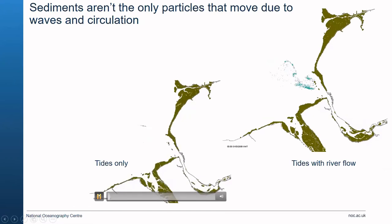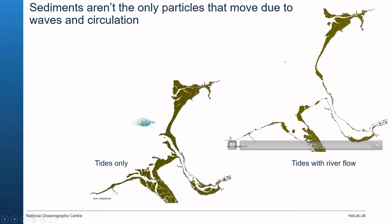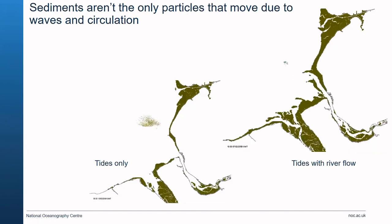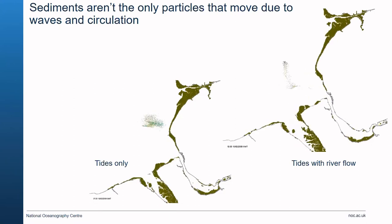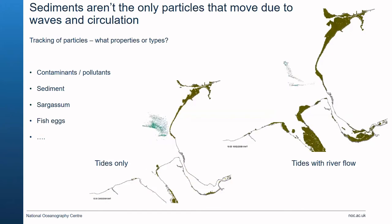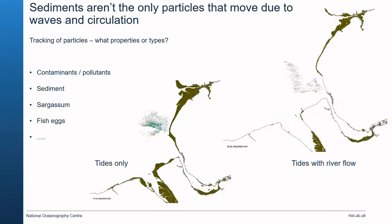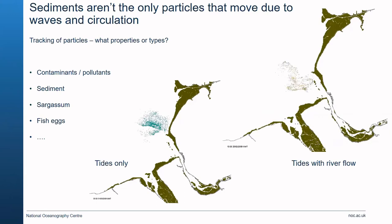These animations show how sediments can move under different conditions. In the first movie we see sediments going backwards and forwards in response to the tide. In the second model we have tides but also include river flow — the particles are moving to the south because in addition to the tidal movement there's a gravitational circulation due to the river flow. Particle tracking models can be used to look at contaminants, pollutants, sediments, sargassum, and fish eggs — you can program the behaviours of particles to track the properties you're interested in.